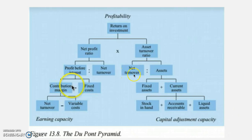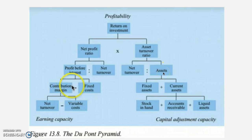Net turnover divided by total assets gives us the asset turnover ratio. The asset turnover ratio is essential in understanding how well the company is at making money upon their investments. The asset turnover ratio is measured in times per year. If it is 1.2 times, it means the company is able to reach the net turnover value in assets 1.2 times per year.